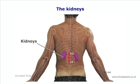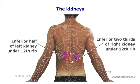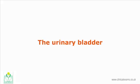The kidneys lie obliquely in a medial to lateral direction. Another method of locating the kidneys is that the lower two-thirds of the right kidney lie below the twelfth rib, while only half of the left kidney is below the twelfth rib. Therefore, the right kidney is situated slightly lower than the left.